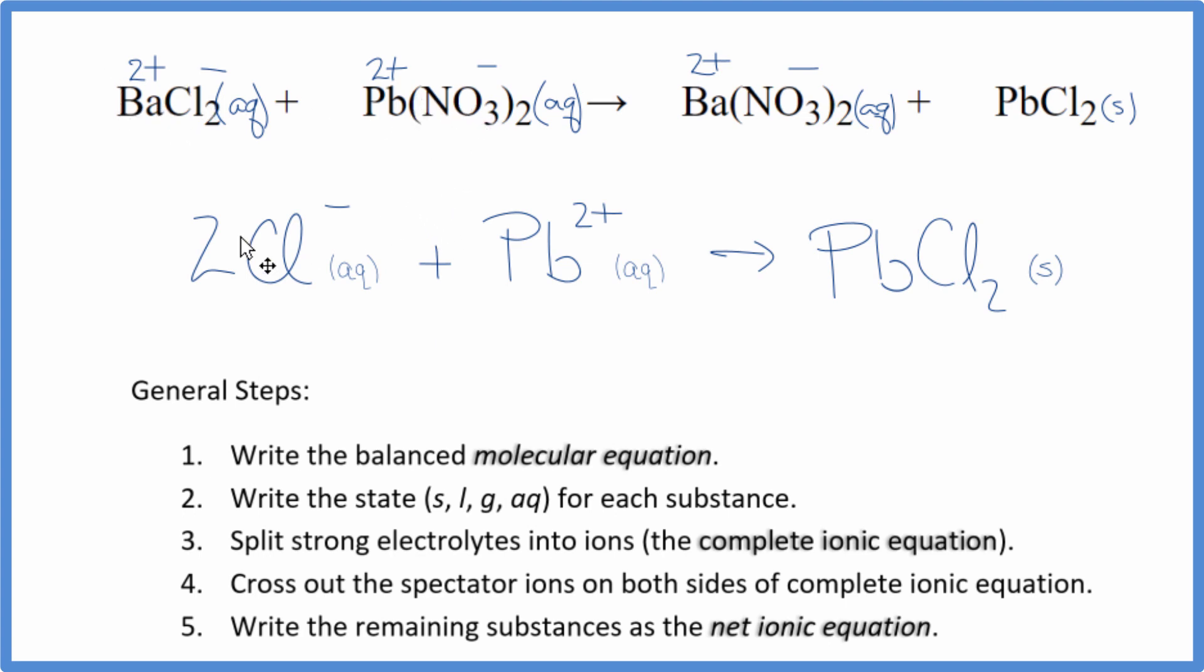You can see the charge is conserved. I have 2 times 1−. That's 2−. With the 2+, that adds up to zero. Net charge is zero. This is a neutral compound. Net charge is zero. And the atoms, they're balanced as well.